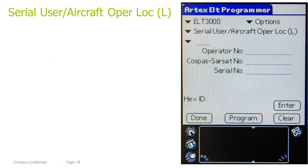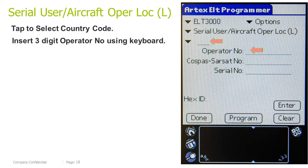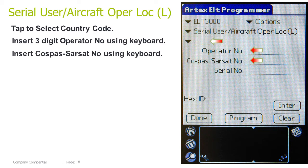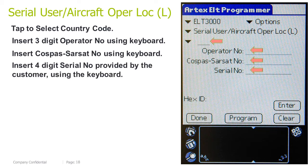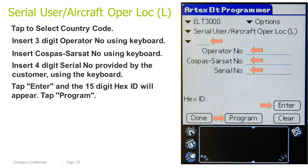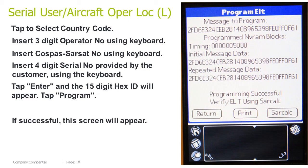Serial user aircraft operator location log: tap to select a country code. Insert the 3-digit operator number using the keyboard. Insert the COSPAS-SARSAT number using the keyboard. Insert the 4-digit serial number provided by the customer using the keyboard. Tap Enter and the 15-digit hex ID will appear. Tap Program. If successful, this screen will appear.